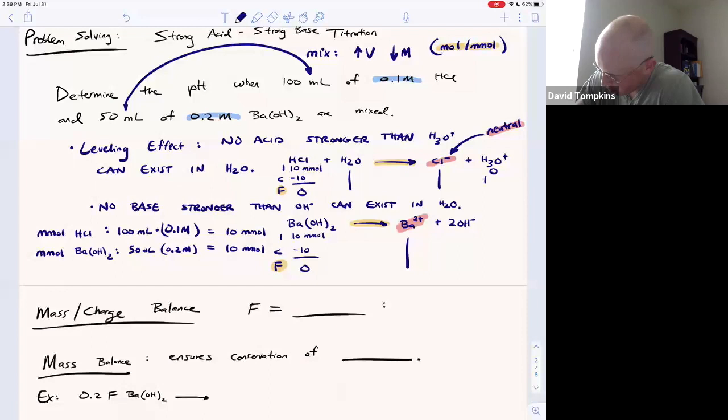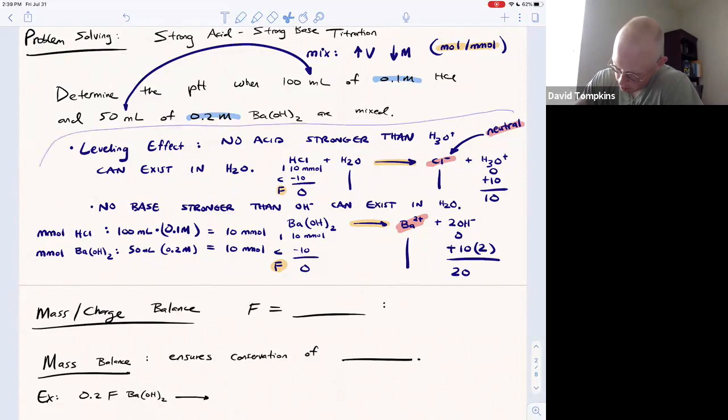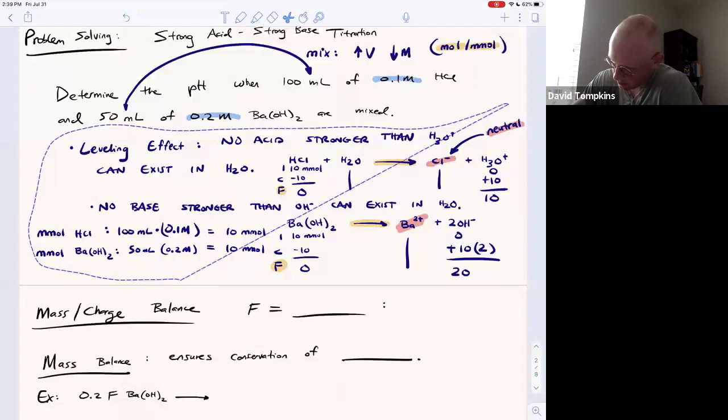For every one HCl we make one hydronium, so you're left with 10 millimoles of hydronium. For every one barium we make two hydroxides, so be careful about those alkaline earth metals when they're paired with hydroxide. If you multiply that stoichiometry by two in the products, you actually make 20 millimoles of hydroxide. So now we can apply one more reaction to find the pH.